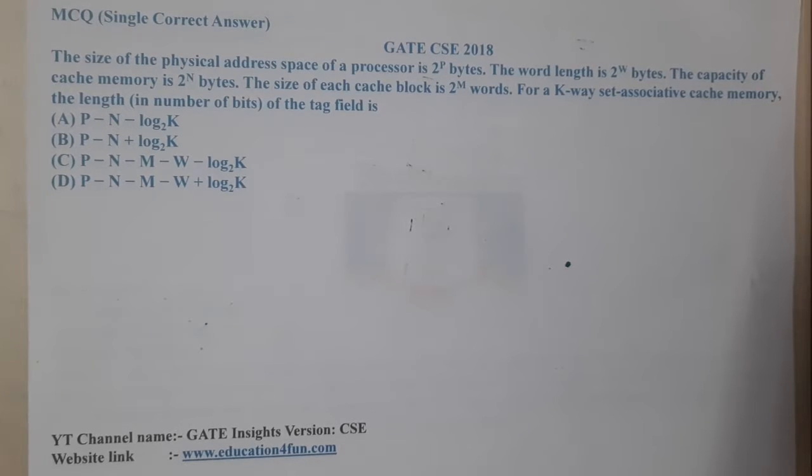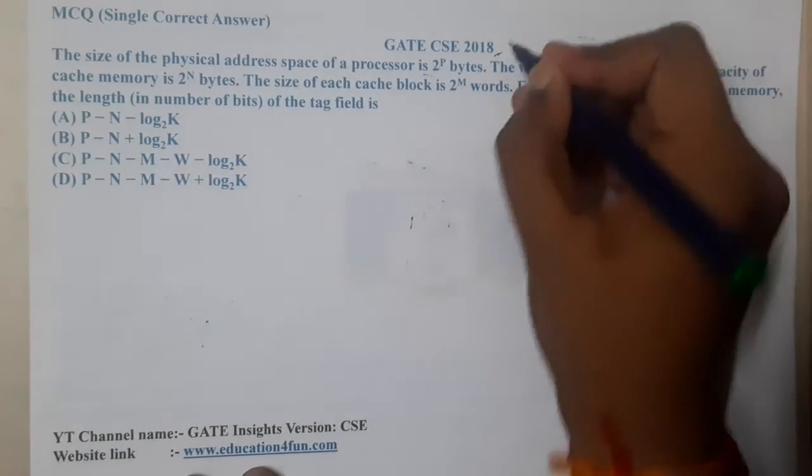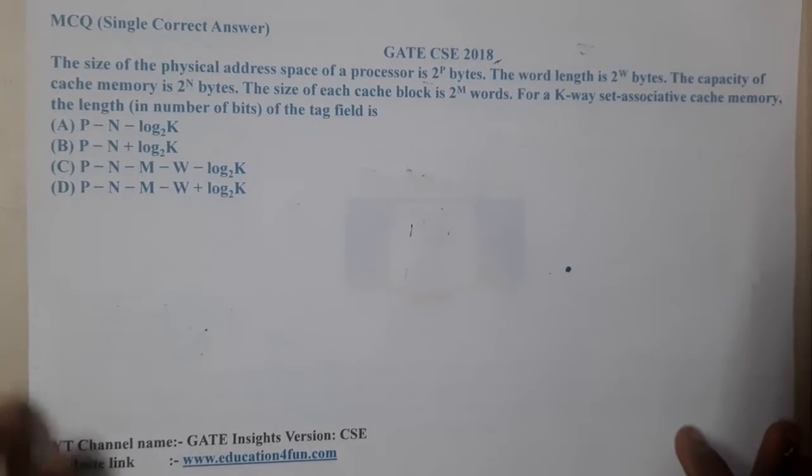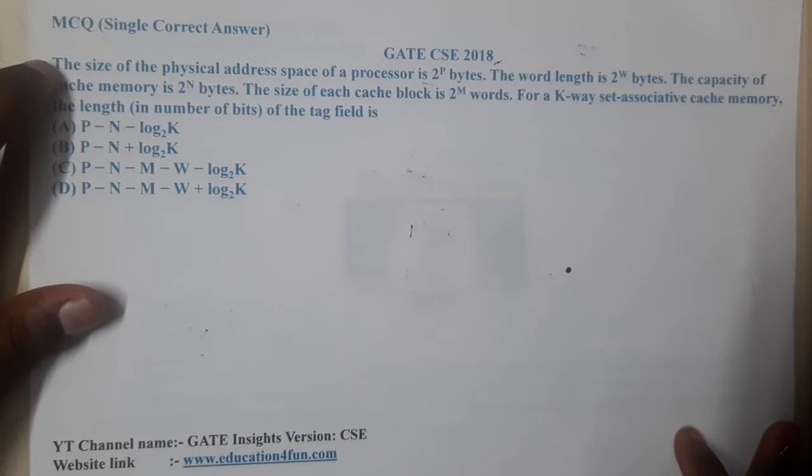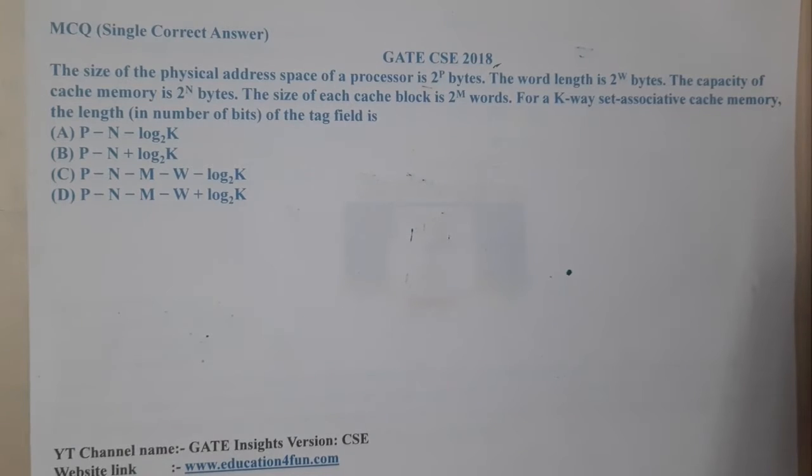Hello guys, we are back with our next lecture. In this lecture, let us go through the next question. So this question belongs to GATE CSE 2018. The question is the size of the physical address. Everything is given in terms of alphabets rather than giving numbers. Instead of numbers, he gave alphabets.